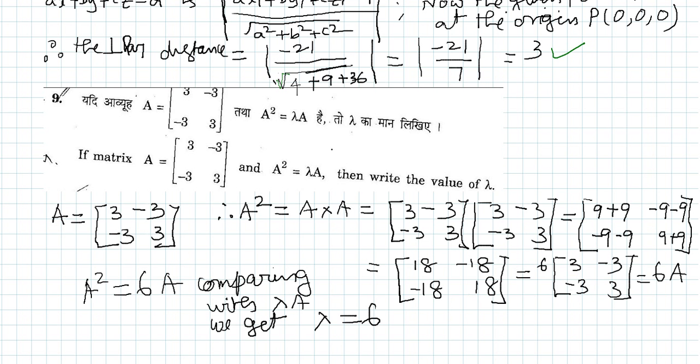...so you get 3 minus 3 minus 3 plus 3, so this is nothing but the given matrix A is 3 minus 3 minus 3 plus 3, so this is equal to 6 times A matrix.